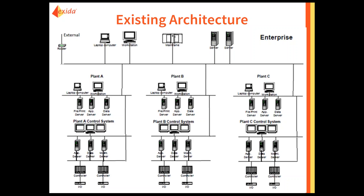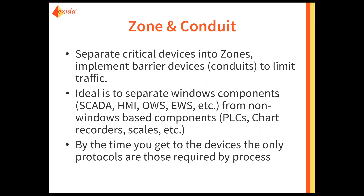This is an example of something we would potentially walk into — purely an example, not based on any actual network we have seen. As you can see, the enterprise network connects directly to the plants, the plants connect directly to the HMI or control system level, and the control system level has dual-homed servers plus an external connection down to the actual controllers. If anything happens on this network, it could propagate across not only the entire single plant but potentially across all the plants. Similar situations have actually been seen in the field.